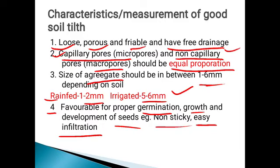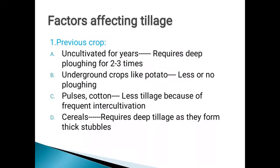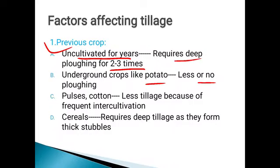Factors affecting tillage: the first factor is the previous crop. If the land was uncultivated for years, it requires deep plowing for two to three times. If the previous crop was pulses or potato, less tillage is required. If the previous crop was cereals, deep tillage is needed.